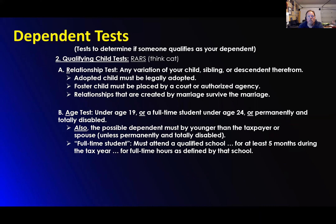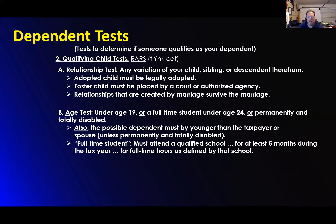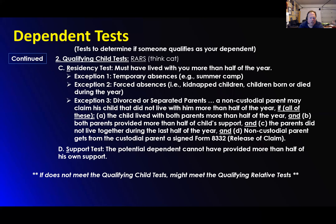What is the age? Under 19 — 18 or younger. What's the age of being an adult? 18. If you're 18 or younger, that's the test. A full-time student under 24, or permanently and totally disabled. A qualifying child has a residency test — did they live with you more than half a year? And the support test — did you provide more than half of their support? Very simple.